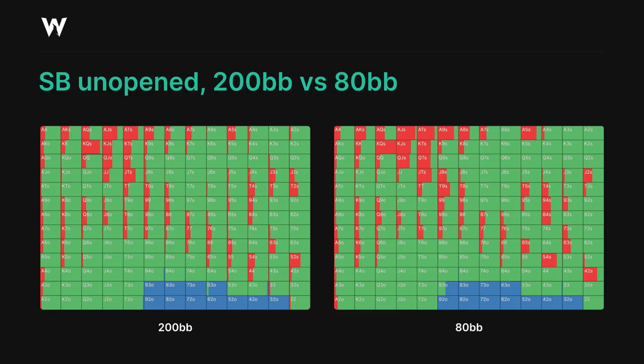In both of these spots, we're folding only the weakest offsuit hands — roughly the bottom 10% of the deck — and our non-folding range is very clearly delineated. We have a polarized raising range, primarily consisting of some of the strongest and weakest suited hands at higher frequencies, along with some slightly less trashy offsuit hands at lower frequencies, with a lot of our most playable categories of hands like suited connectors and pairs also mixing both options.